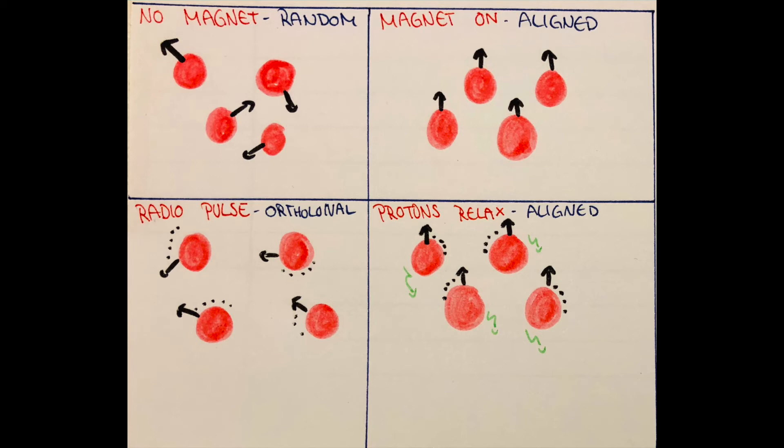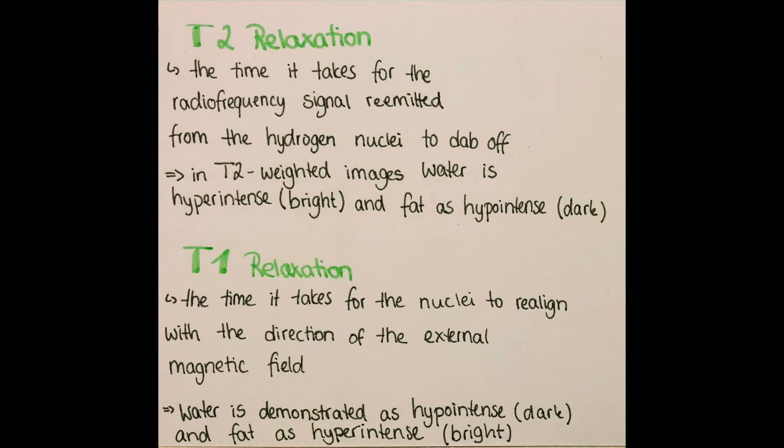The radiofrequency emitted by the hydrogen nuclei can be detected and analyzed by the computer to obtain a picture. The time it takes for the radiofrequency signal from different hydrogen nuclei within different tissues to die off is referred to as T2 relaxation, also known as spin-spin relaxation or transverse relaxation. In T2-weighted images, water will be represented as hyper-intense and fat as hypo-intense. Hyper-intense is bright and hypo-intense will be darker.